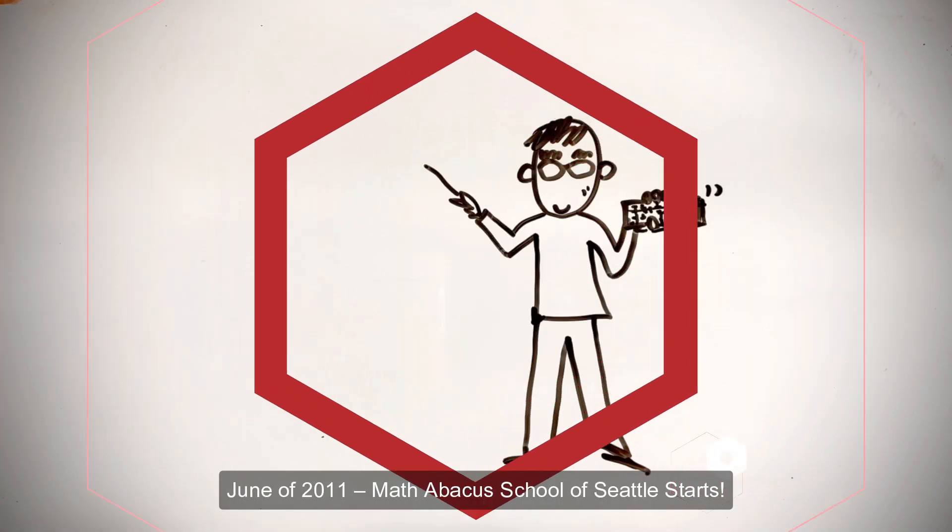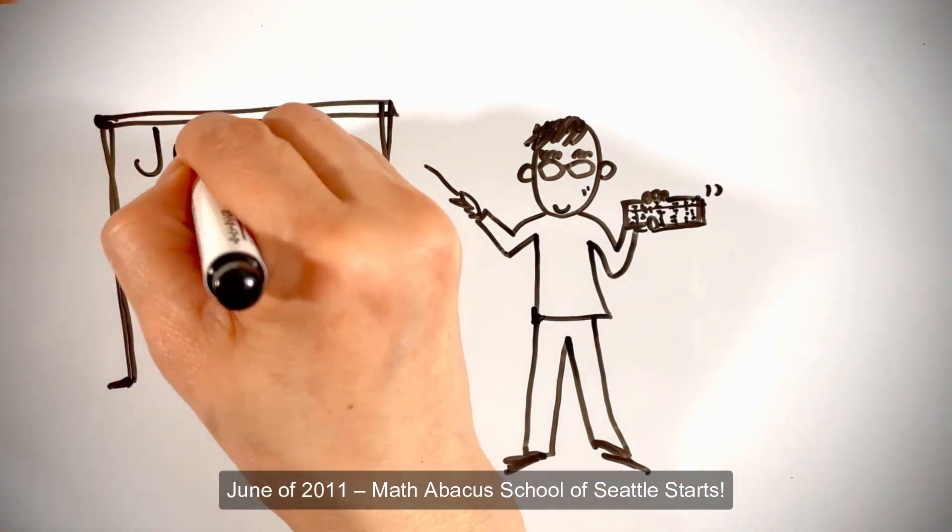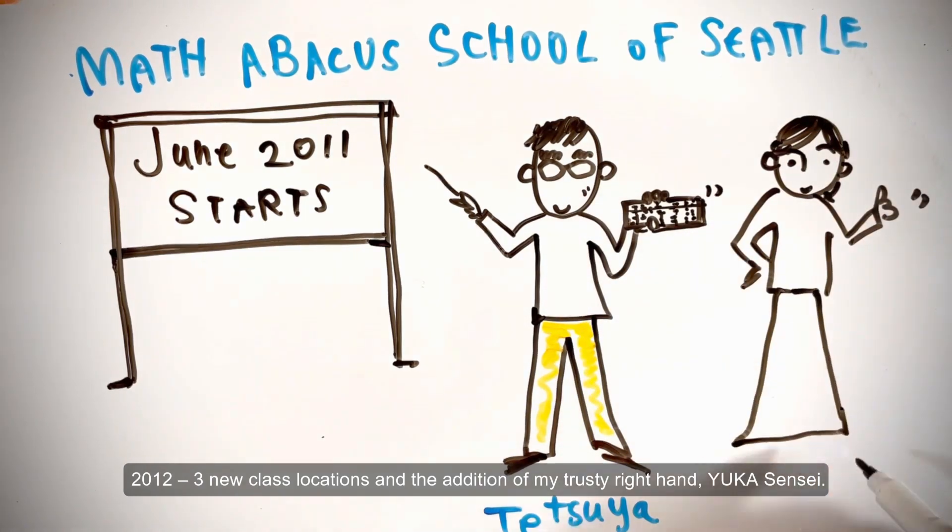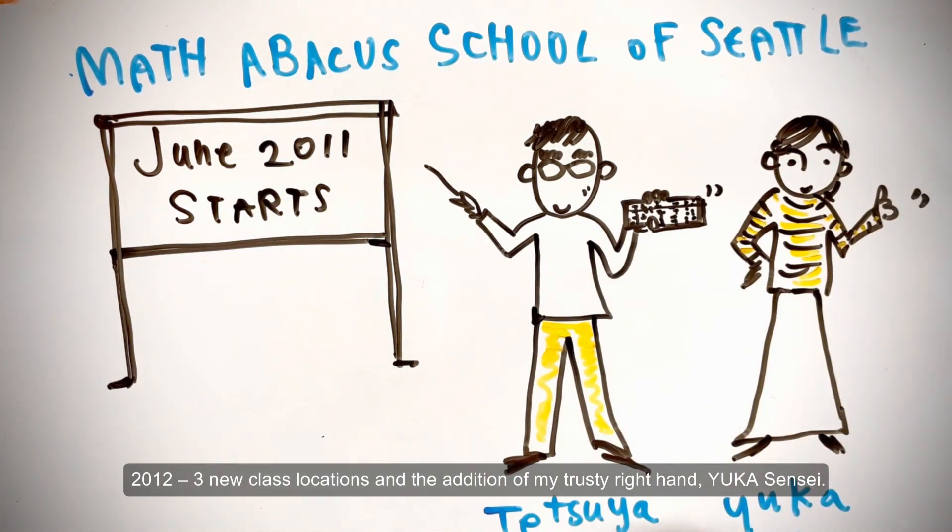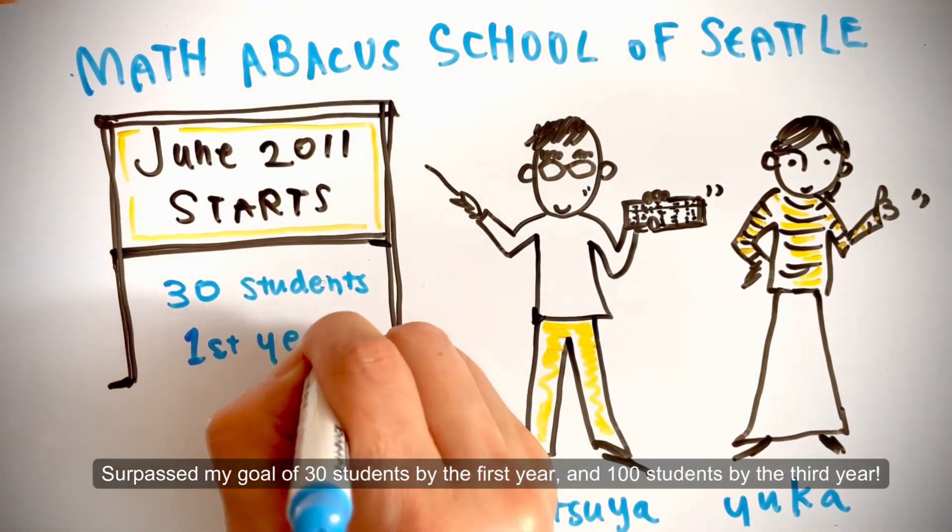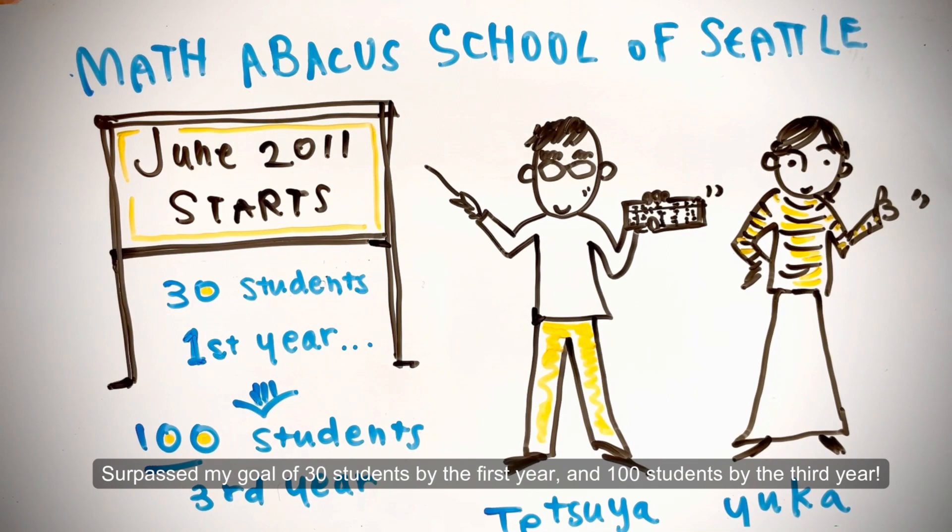In June of 2011, Math Abacus School of Seattle starts. In 2012, three new class locations and the addition of my trusty right hand, Yuka Sensei, surpassed my goal of 30 students by the first year and 100 students by the third year.